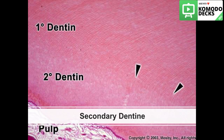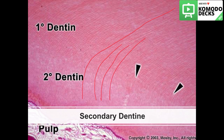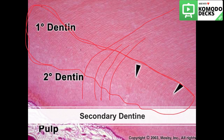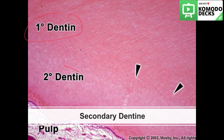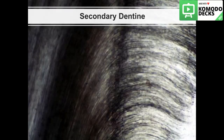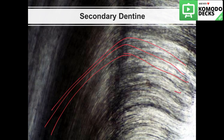The odontoblastic processes were going in one direction and suddenly turned in another, with all the secondary curves coinciding with each other, causing a contour line of Owen between primary and secondary dentine. Another slide shows the change in direction of dentinal tubules between primary and secondary dentine, creating this contour line of Owen.